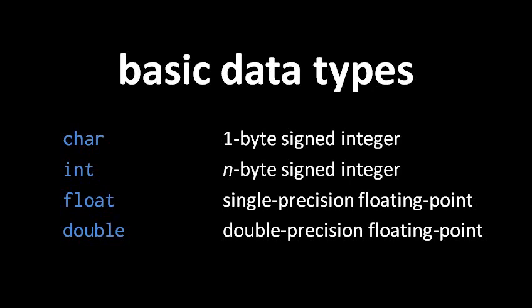An int is also a signed integer, but it's more than one byte, it's n bytes, where n is the natural size for whatever target processor you're compiling for. So if you take your C program and you compile it for a 32-bit processor, then the ints are going to be 4 bytes in size, whereas if you compile for a 64-bit processor, it's going to be 8 bytes in size.